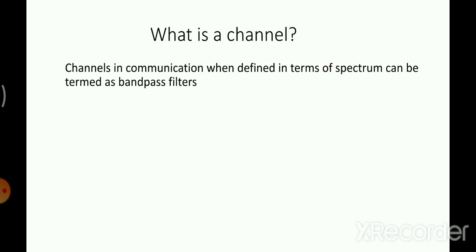In a simple and superficial way, channels in a communication system can be described as bandpass filters — they operate for a certain band of frequency and provide a certain bandwidth. Keep in mind: channels have limited bandwidth and act partially like a bandpass filter.